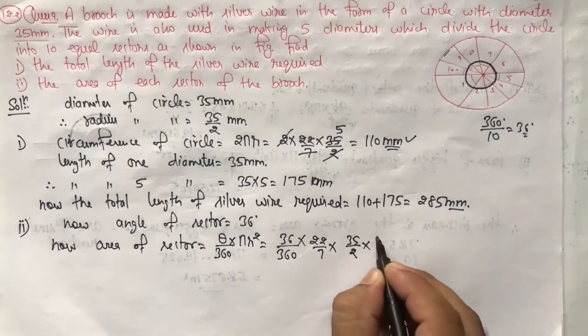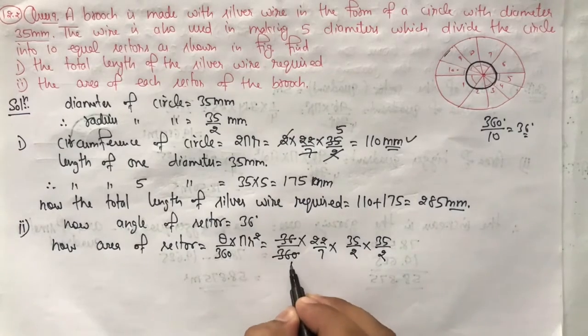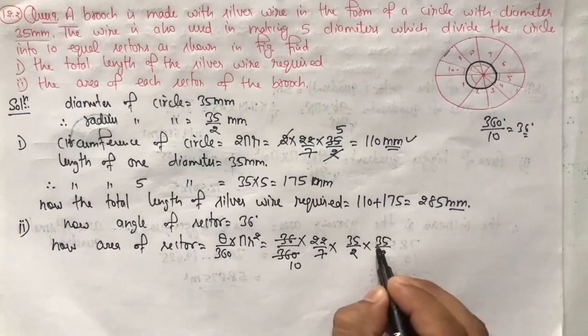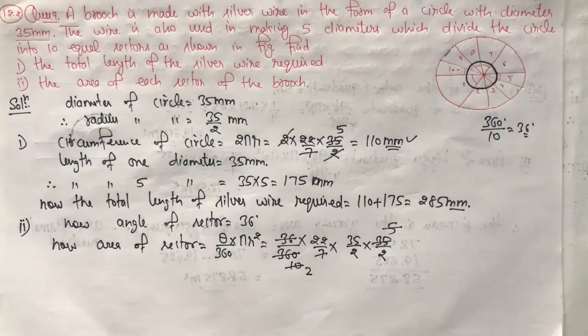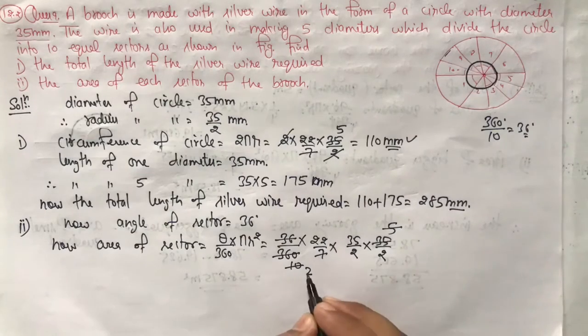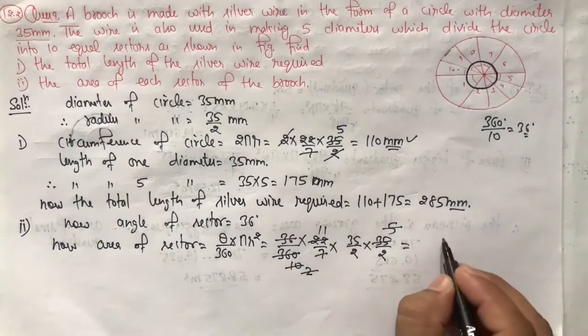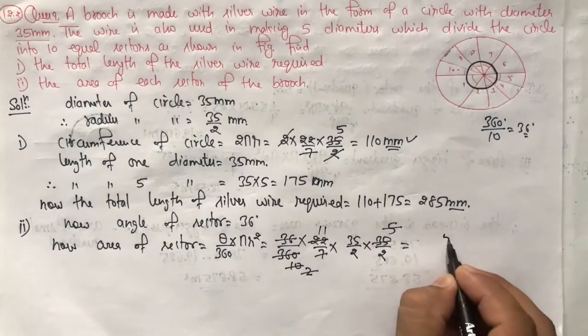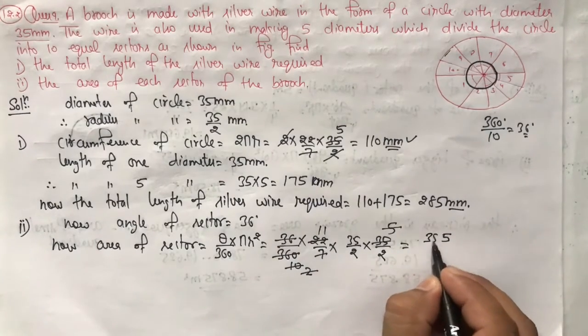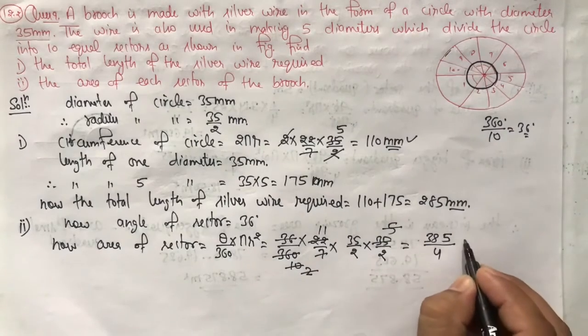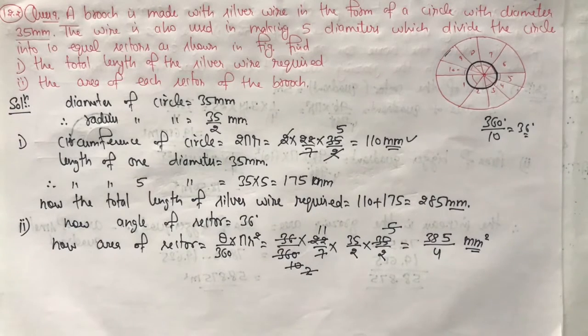Squaring 35 upon 2 gives 35/2 × 35/2. Simplifying: 36 cancels with 360, 7 and 35 cancel to 5, and 2s cancel. Computing 11 × 35: 11 × 5 = 55, 11 × 3 = 30, 3 plus 5 gives 385, divided by 2 × 4 gives the answer in mm². This is the required area.